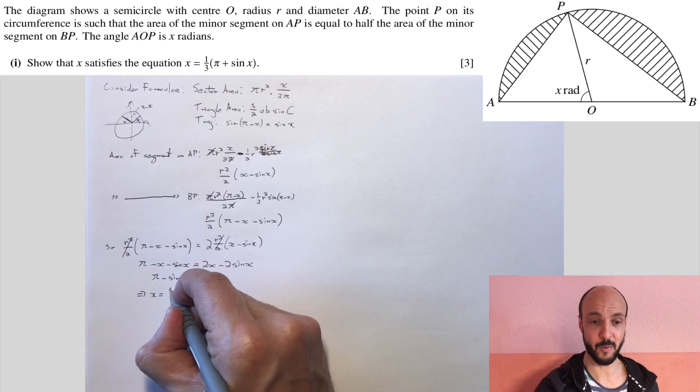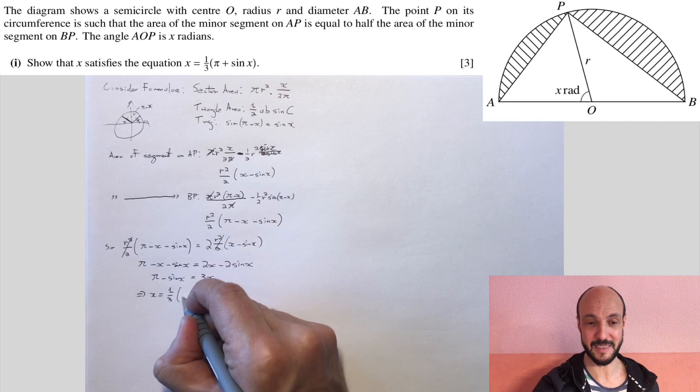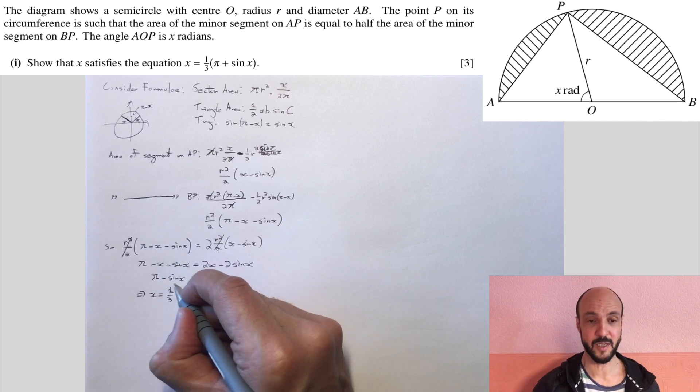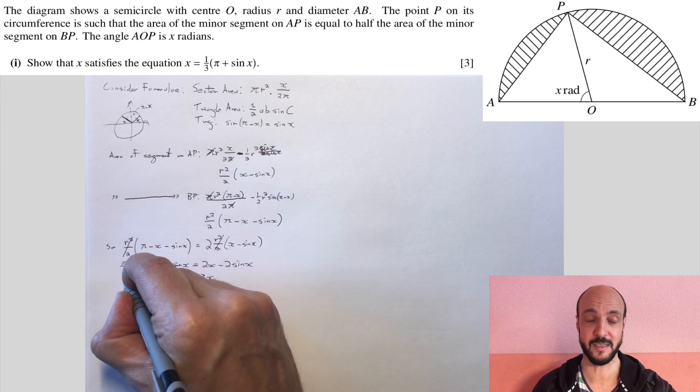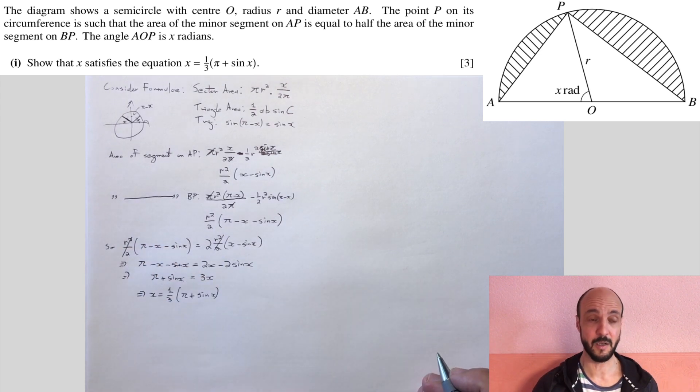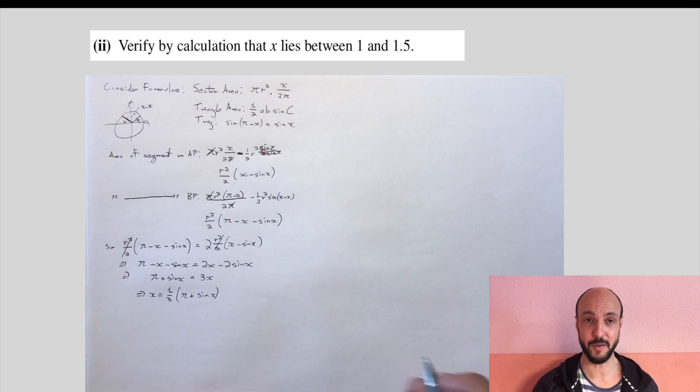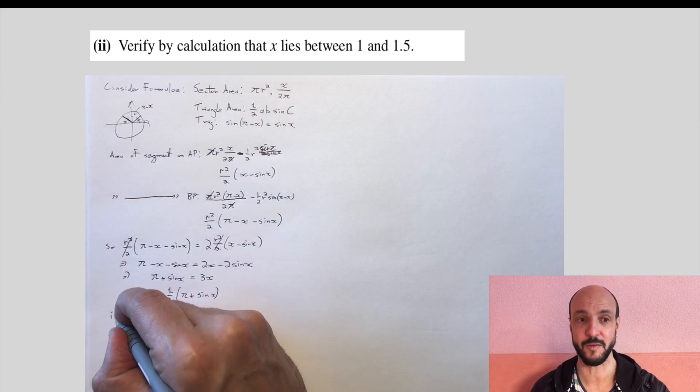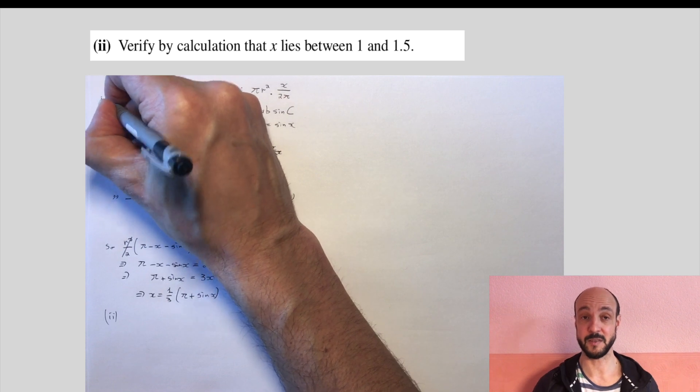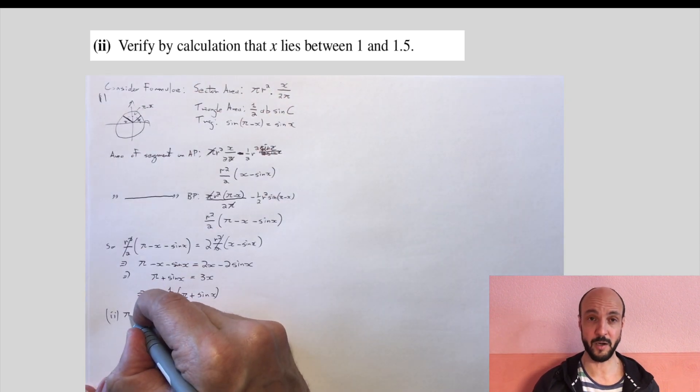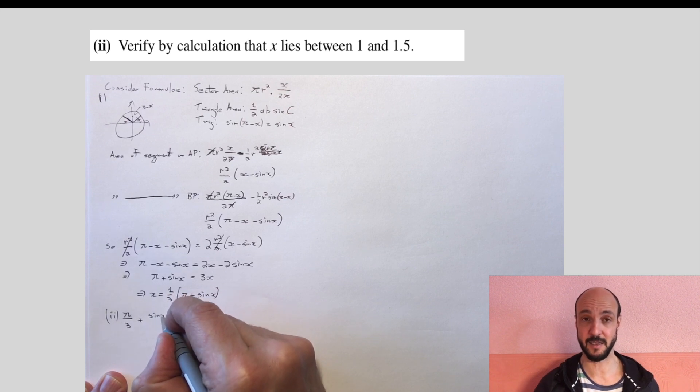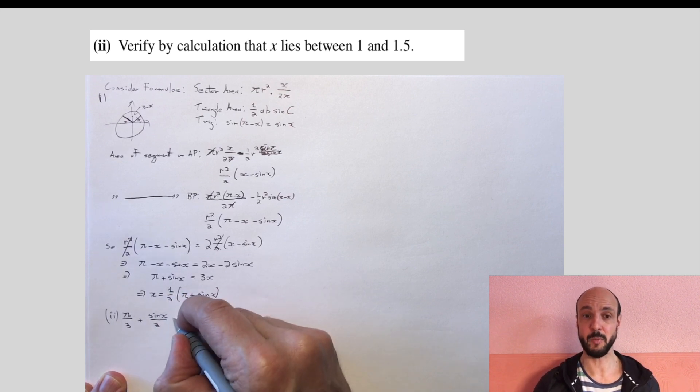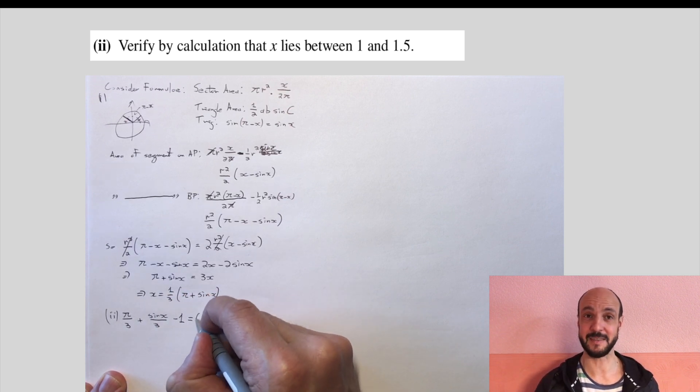Now the second part of the question, again, a lot of people didn't attempt. Very straightforward. We just need to substitute 1 in and substitute 1.5 in. And the easiest way is to rearrange this equation to put it equal to 0. So we can rearrange it as pi over 3 plus sine x over 3 minus 1 equals 0. And we're going to try this for 1 and try this for 1.5 to show that 1 gives us a negative answer and 1 gives us a positive answer.